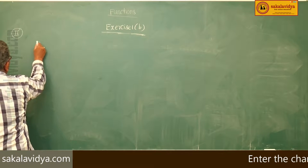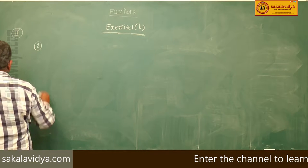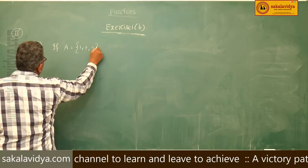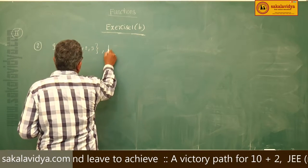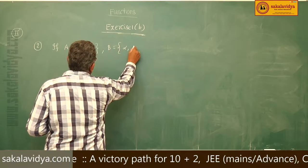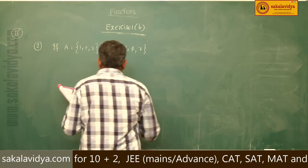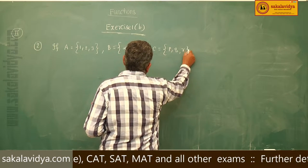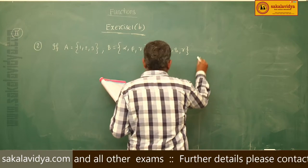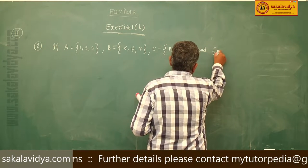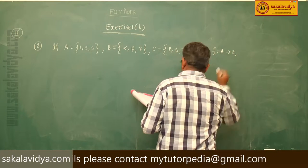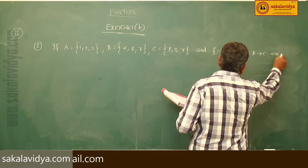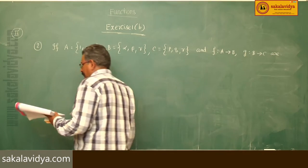Second problem. If A is equal to {1, 2, 3}, B is equal to {alpha, beta, gamma}, C is equal to {P, Q, R}, and F maps A to B, G maps B to C, are defined by the following.